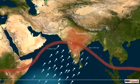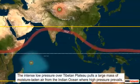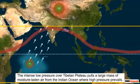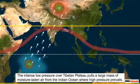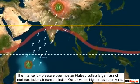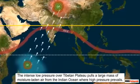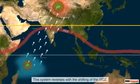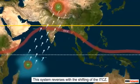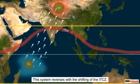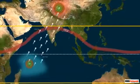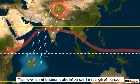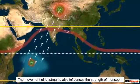The intense low-pressure system formed over the Tibetan plateau attracts air from the intense high-pressure system that develops over the Indian Ocean near Madagascar, an island off Africa. This causes a strong pull of moisture-laden air mass from the ocean to the landmass of India. While the shifting of the ITCZ causes the pressure system to reverse, resulting in the reversal of wind, the movement of upper air circulation — or jet streams — also affects the summer and winter monsoons of India.